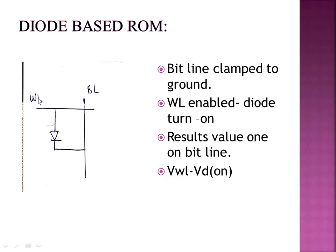In Diode-Based ROM, if you have a wordline and a bitline, the bitline is connected to ground by default — it is clamped to ground, so its default value is zero. If there is a diode present and the wordline has high voltage, the diode turns on.